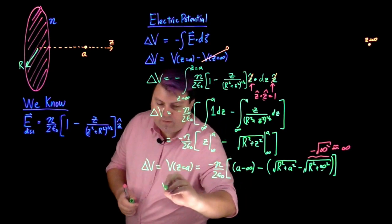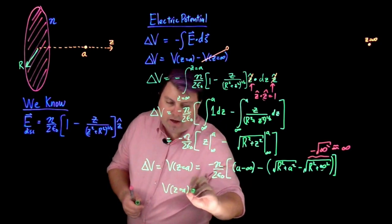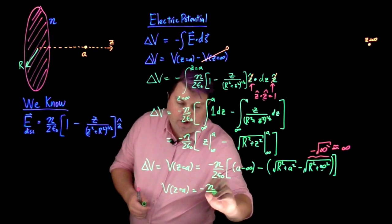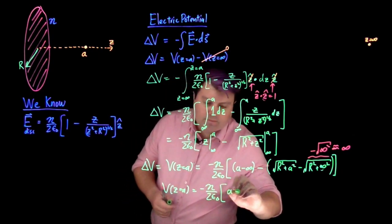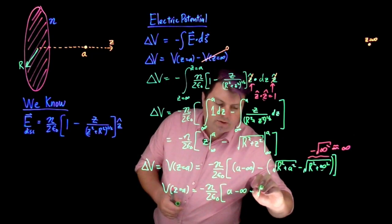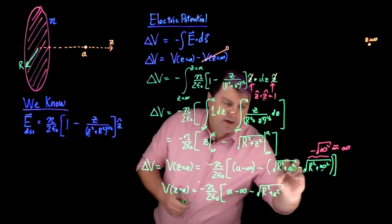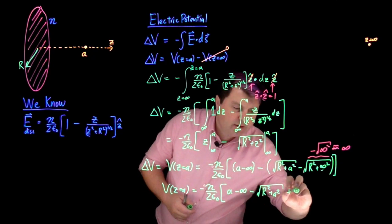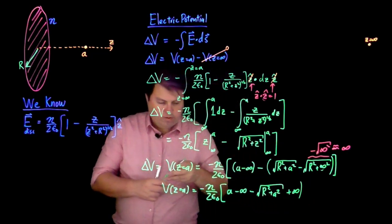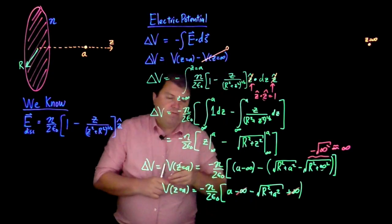So now I have my electric potential at z equals a is negative eta over two epsilon not, a minus infinity minus square root of r squared plus a squared minus minus gives me plus infinity. So we can hopefully happily cancel out negative infinity, positive infinity.